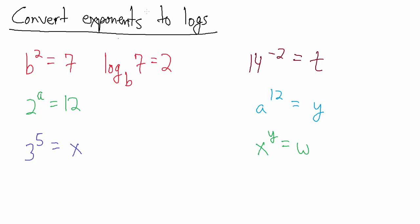How about here, we have 2 to the a equals 12. The base is 2, the exponent is a, this number over here is 12. So what we say is the base 2 logarithm of the number 12 equals a, because 2 to the a equals 12.